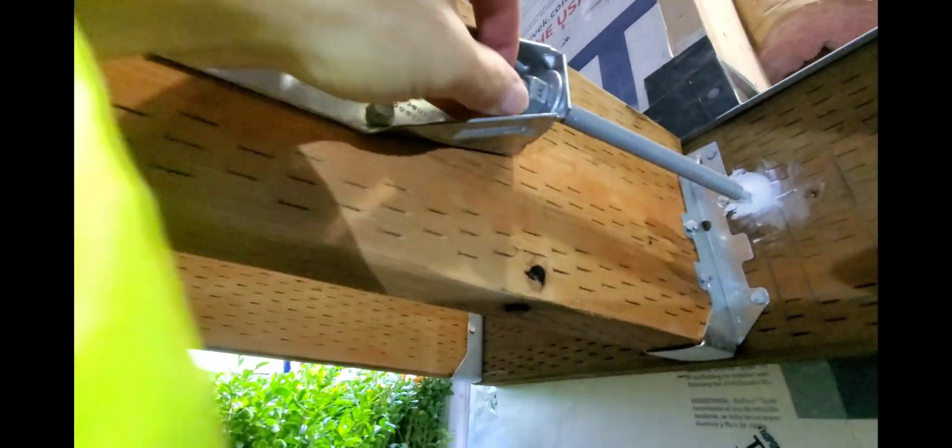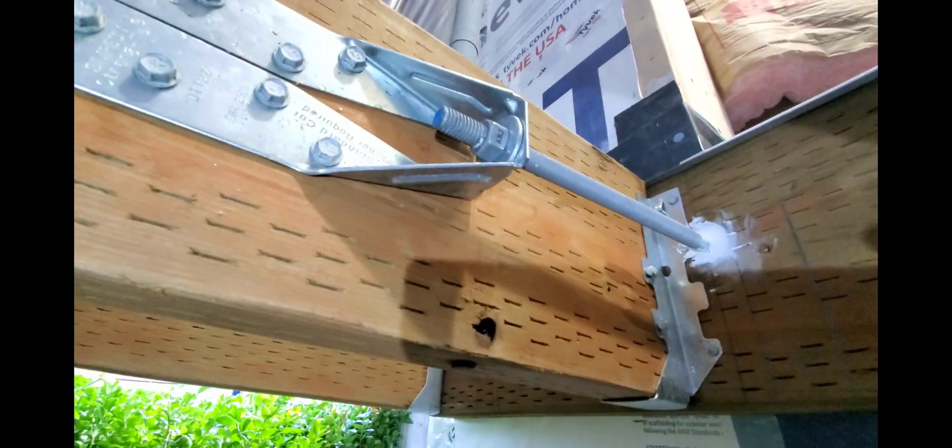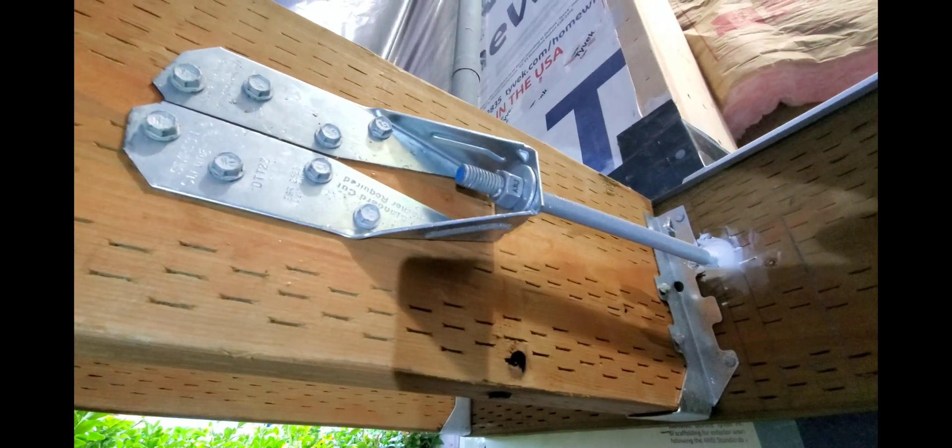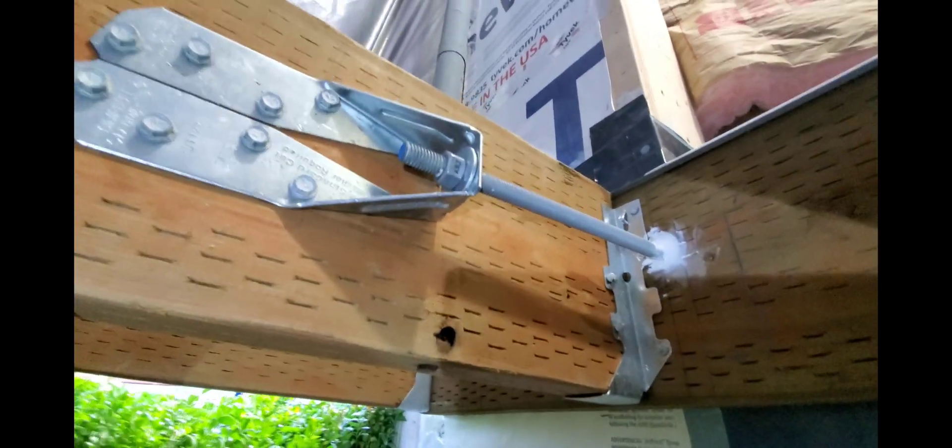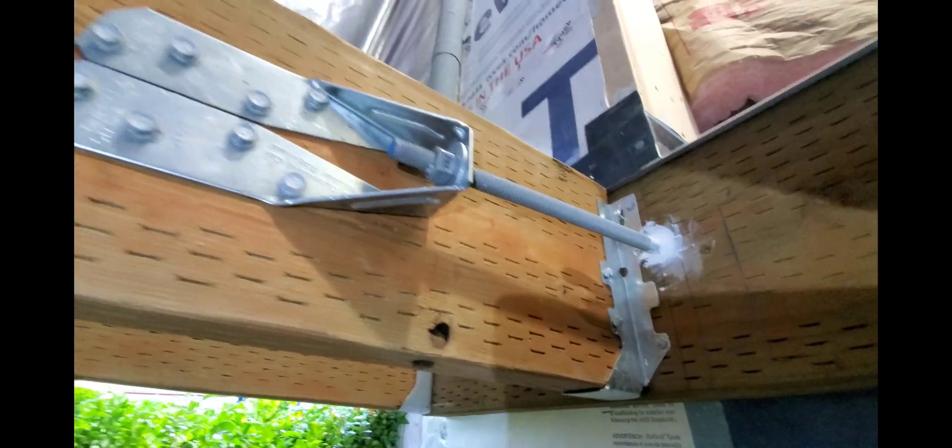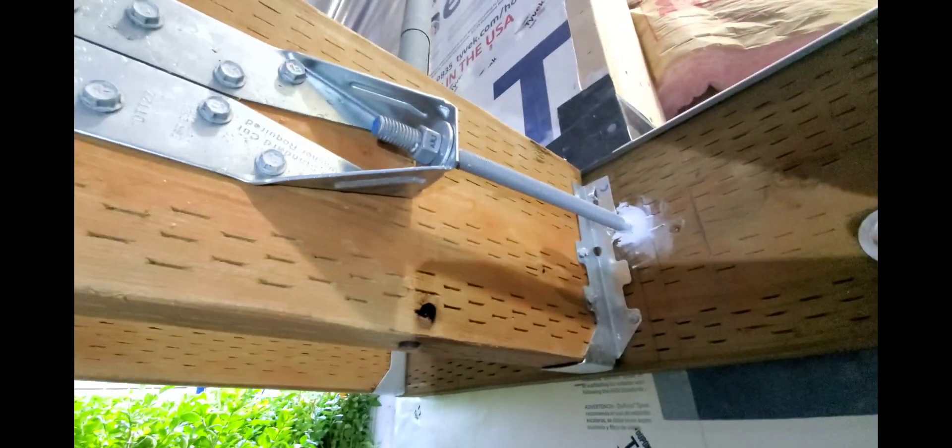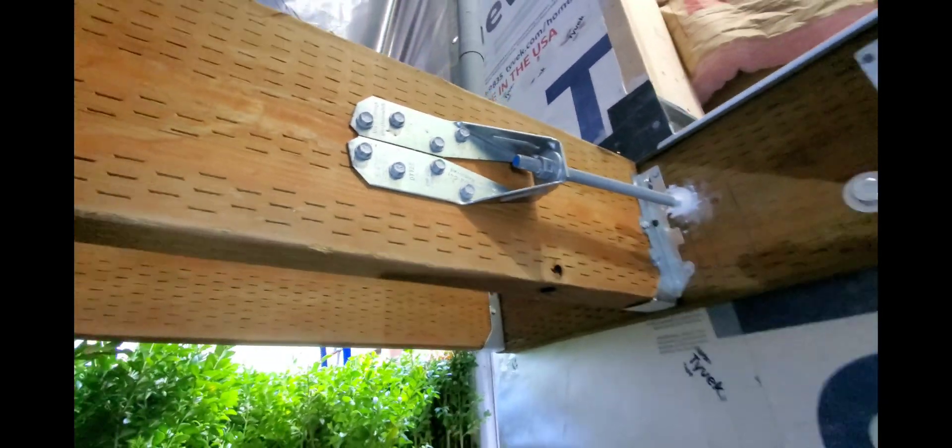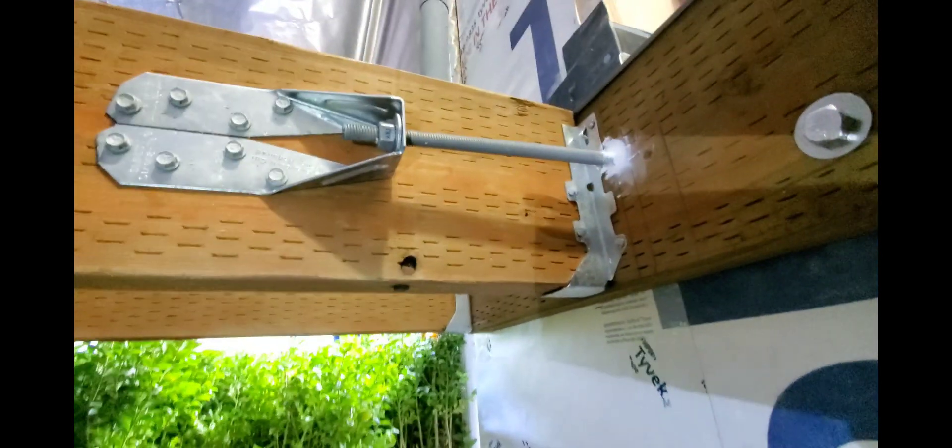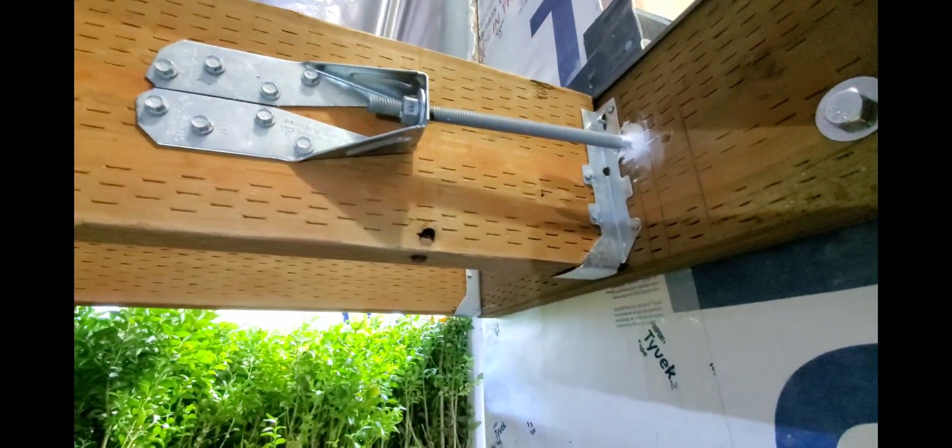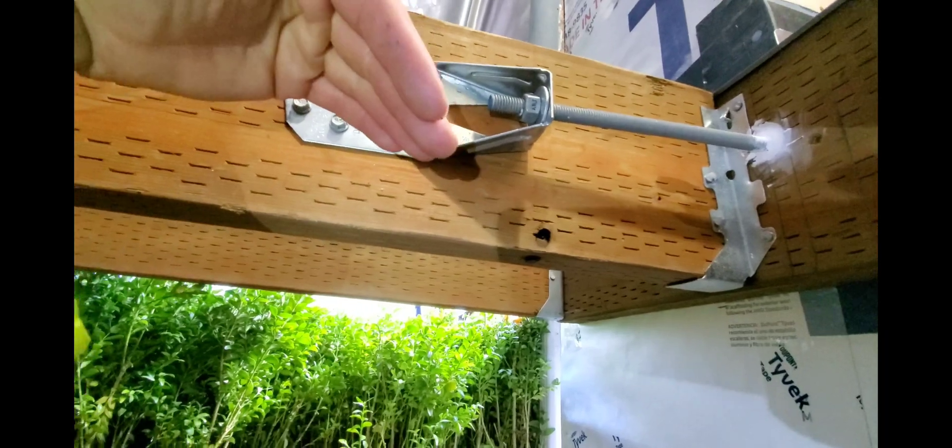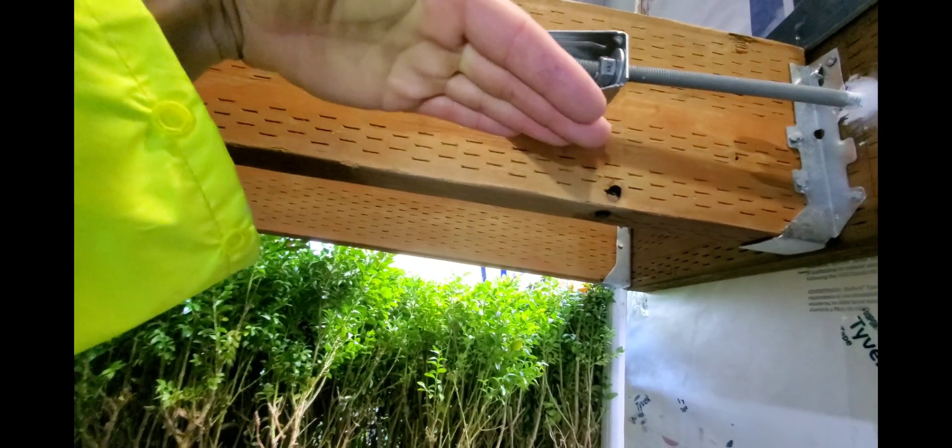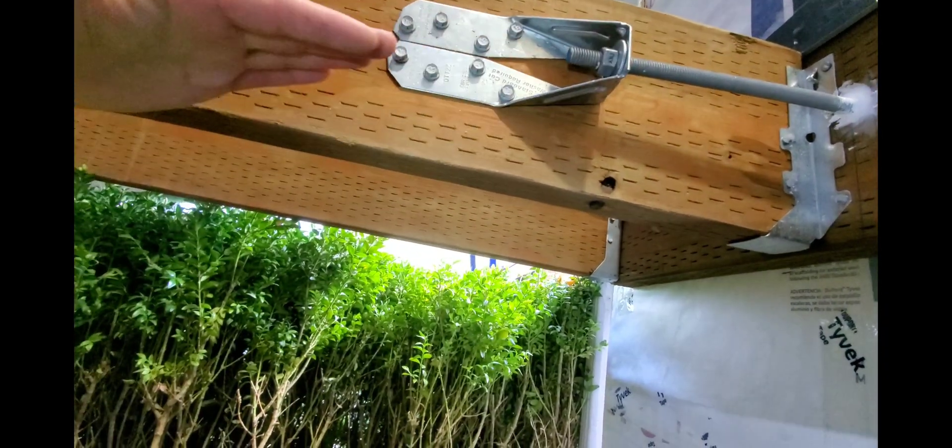We've got the outside one installed, now we can tighten it up. There is no torque spec that I'm aware of, so just tighten it down and we are done. Make sure it's in line. You don't want this bracket at like an angle. You want it exactly with the all-thread.